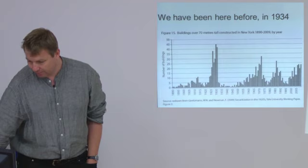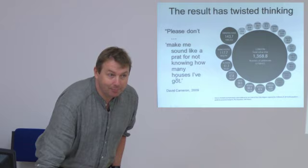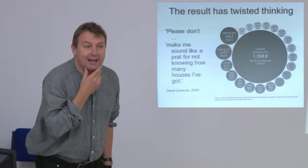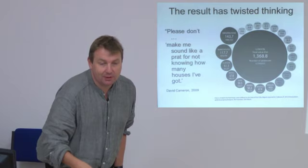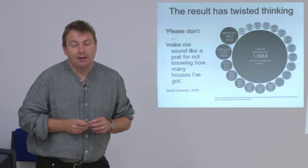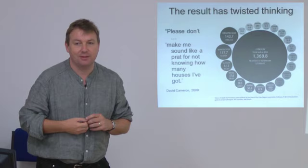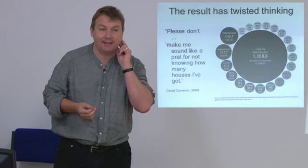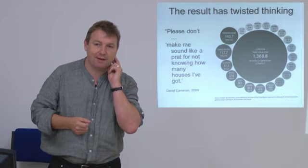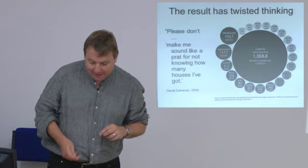This is what Britain looks like if you draw areas in proportion to how much the housing is worth. Can somebody spot Newcastle? Newcastle is up there. But that is what this country looks like from the point of view of residential property. We have a lot of houses. One thing I'm going to argue with you is the current major policy suggestion to deal with the problem in Britain is that we need to build more houses.